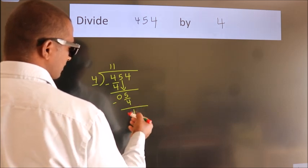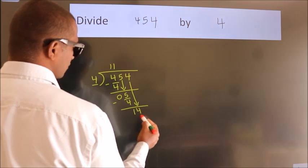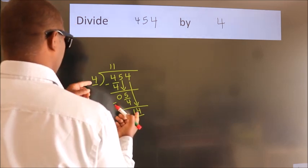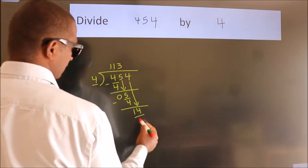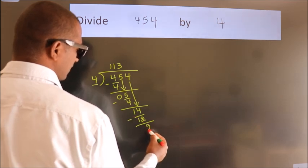After this, bring down the beside number. So, 4 down. So, 14. A number close to 14 in 4 table is 4, 3 is 12. Now, we subtract. We get 2.